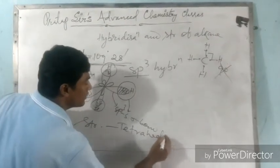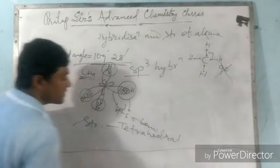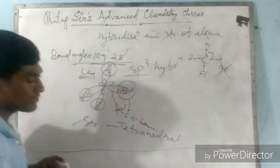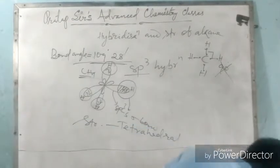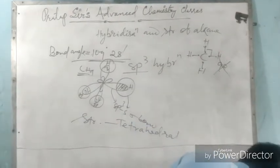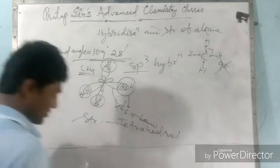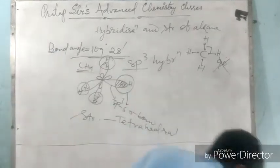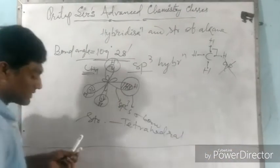The structure, as you know, is tetrahedral. Here is the model in front of you — this is the structure of methane, which we are discussing first.